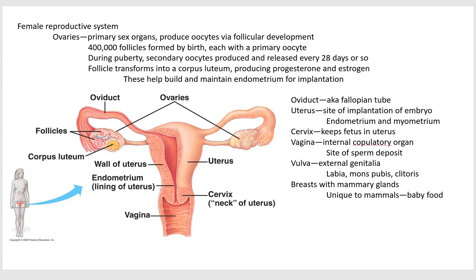The cervix is kind of like a pinch point, a bottleneck at the bottom of the uterus to keep the developing fetus inside. The vagina is often mistaken for the external genitalia — the vagina is inside and it is a copulatory organ for having sex, so that's where sperm are deposited. The external genitalia would be more correctly called the vulva, and those include the labia, the mons pubis, and the clitoris, which as it turns out is homologous to the penis of males. And mammary glands are unique to mammals — that's where we get our name — we evolved a neat way to feed our offspring by modifying some sweat glands and secreting milk.